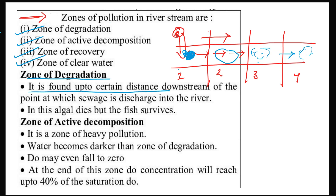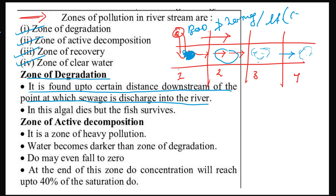The zone of degradation is found up to a certain distance downstream of the point at which sewage is discharged into the river. For the treatment of sewage, the BOD should not be greater than 20 mg per liter — this is a general requirement according to code. In this zone, algae die but fish survive.